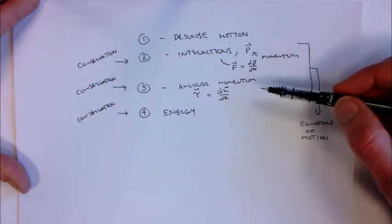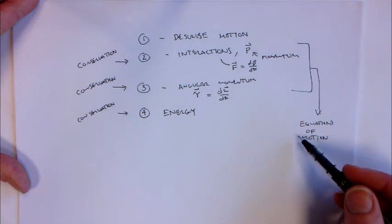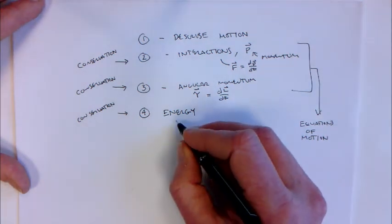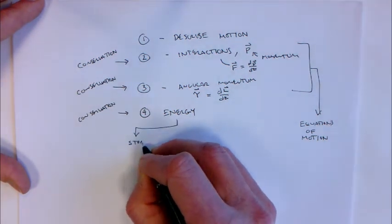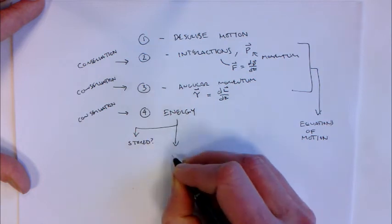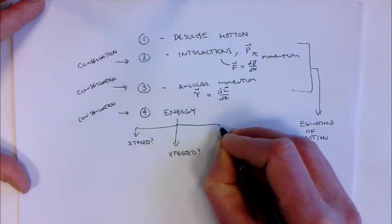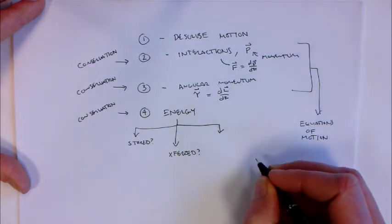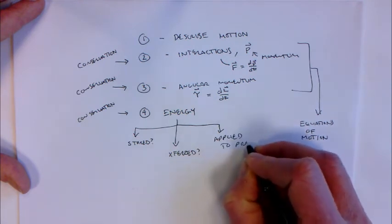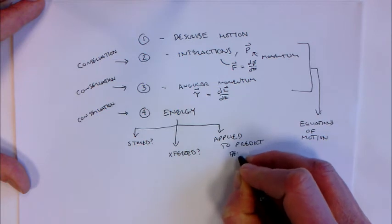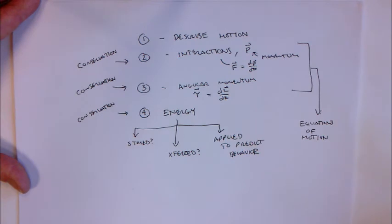We'll ask how does energy change, where can energy be stored, and how can you use energy to make predictions about how a system evolves. The kinds of questions we'll ask first are: where can energy be stored, how can it be transferred, and then how can the idea of conservation of energy be applied to predicting the behavior of mechanical systems. That's the big picture of where we're going in Module 4.